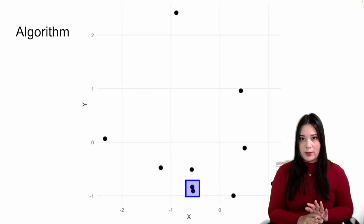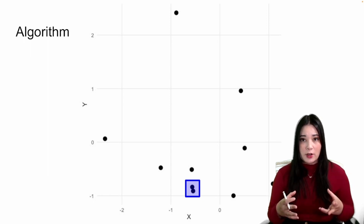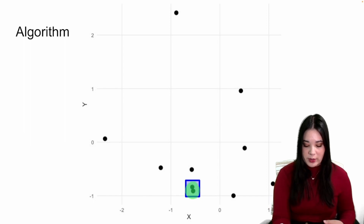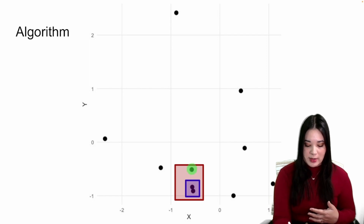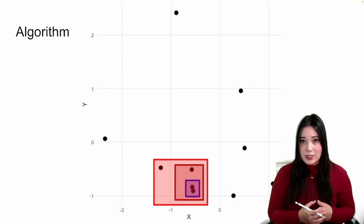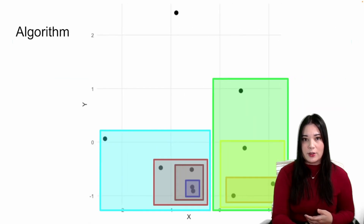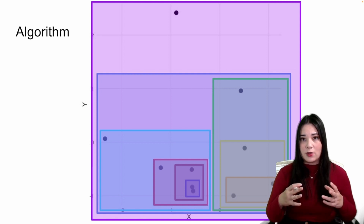Luckily, the algorithm for this is incredibly simple. At each step, we're just going to merge the two closest clusters. When we first start, each point is its own cluster, so we're basically merging the two closest points. In this really simple example, it's these two points here. Next, we merge the next two closest clusters, which in this case is going to be this individual data point and this cluster of two data points. And then we merge the next two closest clusters, and merge, and merge, and merge, until finally all of our data points are in a single cluster.